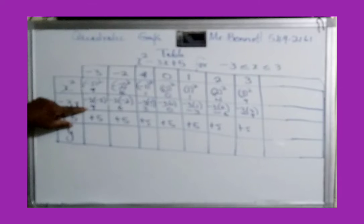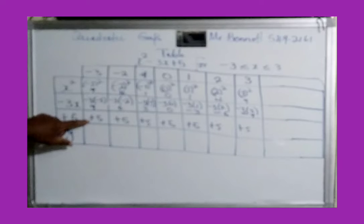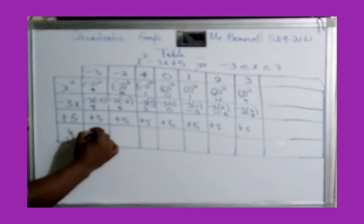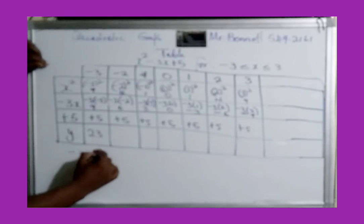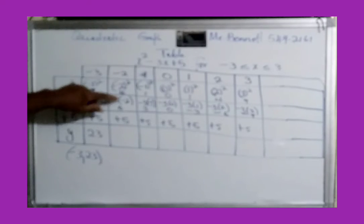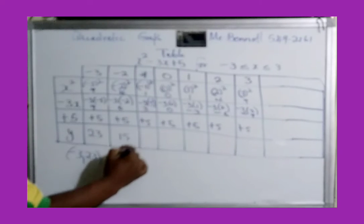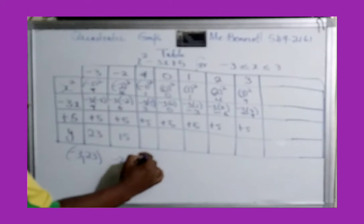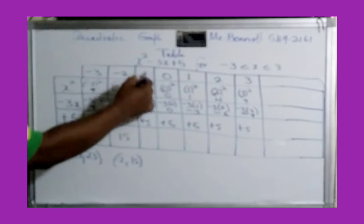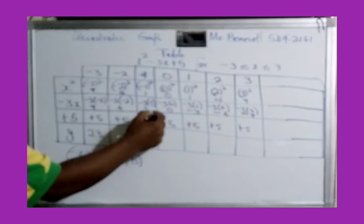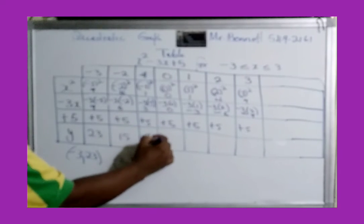Now whatever answers we get, we add them. So for x = negative 3: 9 plus 9 is 18, plus 5 is 23. For x = negative 2: 4 plus 6 is 10, plus 5 is 15. For x = negative 1: 1 plus 3 is 4, plus 5 is 9.